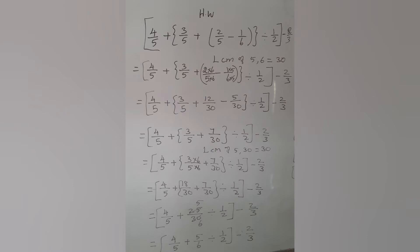Question: Simplify 4/5 plus 3/5 plus 2/5 minus 1/6, divided by 1/2 minus 2/3. Now we can take the LCM of 5 and 6, because we want to remove the bracket. First parenthesis, second curly, third square bracket. LCM of 5 and 6 is 30. Now 2/5 means multiply by 6, and 1/6 is multiply by 5. So the answer is 12 minus 5 equals 7. That is 7/30.